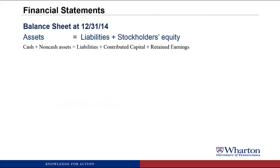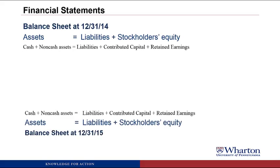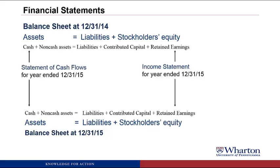Let me show you this graphically. Say we have a balance sheet at December 31, 2014 — assets equal liabilities plus stockholders' equity — splitting assets into cash and non-cash assets, and stockholders' equity into contributed capital and retained earnings. Then we have a balance sheet at the end of 2015. The difference in retained earnings is explained in the income statement for the year ended December 31, 2015, and the difference in cash is explained in the statement of cash flows for the year ended December 31, 2015.